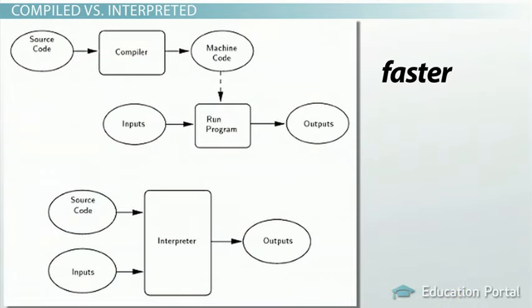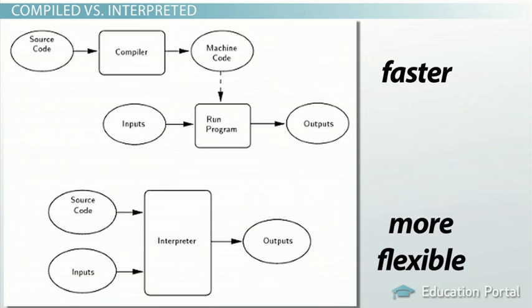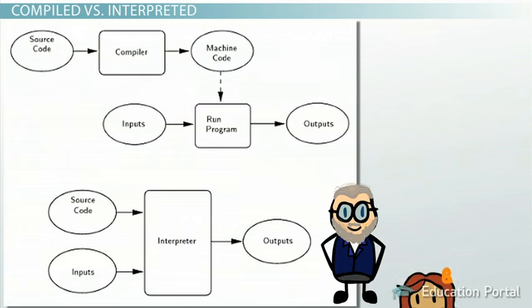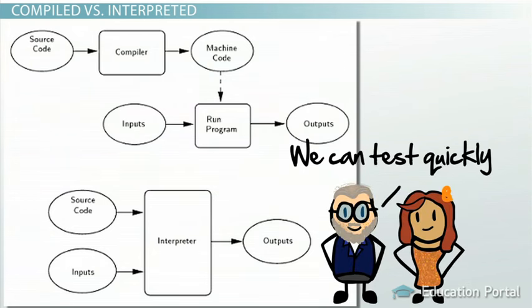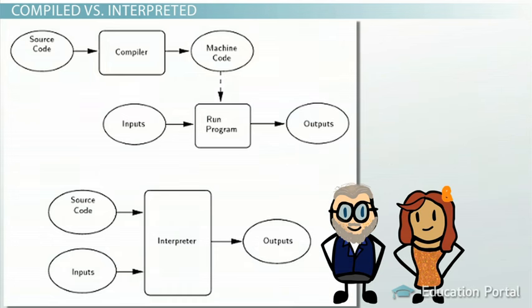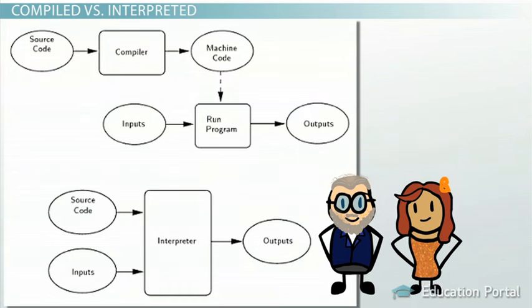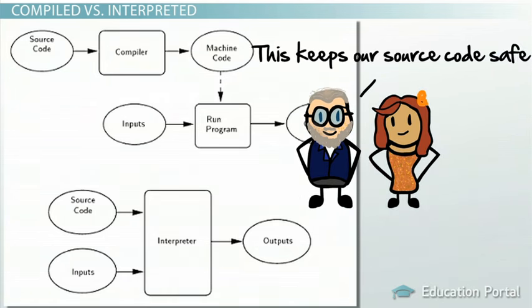Compiled code tends to be faster since the translation is completed in one step prior to the actual execution. Interpreted code, on the other hand, is more flexible and can be run interactively. For example, using interpreted code, you can try out a few lines of code to see if they work very quickly without having to go through the steps of compiling and executing the program. One advantage of using compiled code is that it does not reveal the original source code.